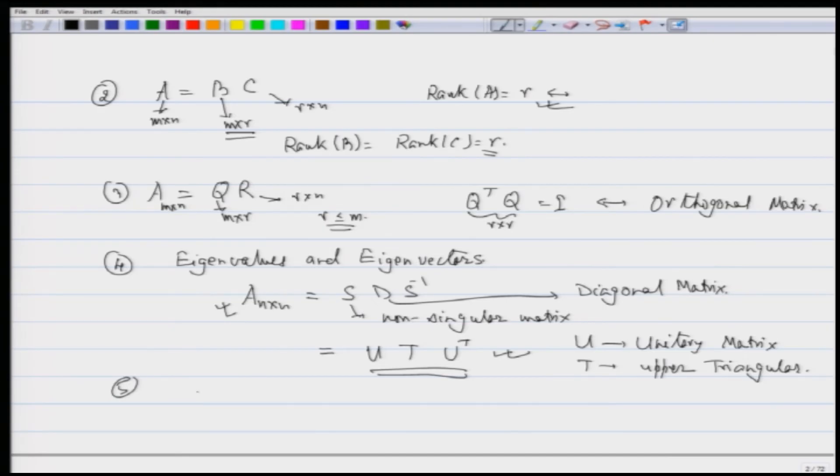And then the last thing that we would like to do in this course is given that we have a matrix A which is M cross N, we would like to write it as U sigma V transpose. U and V are unitary matrices. The sizes are meaningful and this sigma is called the singular values of A, which are related with what are called Eigen values of A A transpose or A transpose A. That is the aim of the course.